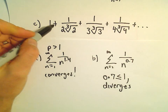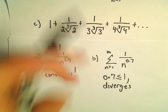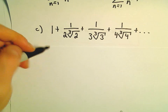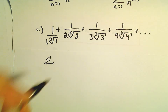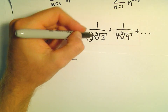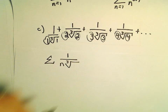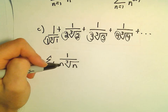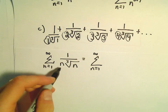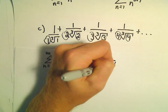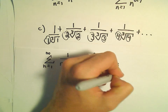Last but not least, we have 1 plus 1 over 2 times the cube root of 2, plus 1 over 3 times the cube root of 3, plus 1 over 4 times the cube root of 4. We can write this using series notation — even the first term is 1 over 1 times the cube root of 1. Everything follows a pattern, so we can write the series as 1 over n times the cube root of n, from n equals 1 to infinity. That gives us n times n to the 1/3, which is n to the 4/3 power. Since 4/3 is greater than 1, we have a convergent p-series.